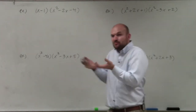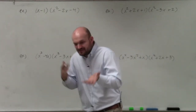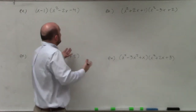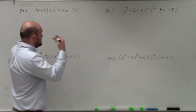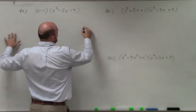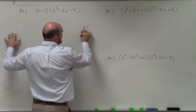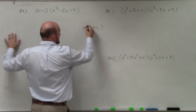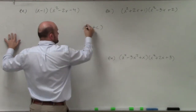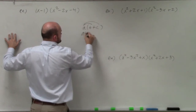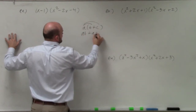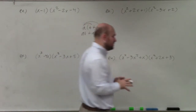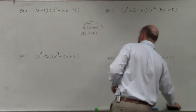Since we don't have binomials, FOIL is not really going to work or make as much sense. But if you think of the process of the distributive property, it doesn't really matter how many terms A, B, and C have. Whatever is outside the parenthesis, I need to multiply it times every single term inside that parenthesis.